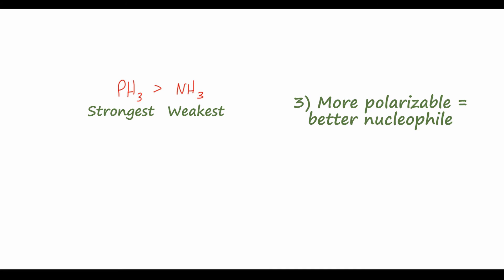Same with these compounds, H2Se, so with selenium, H2S, and H2O. So again, selenium is the largest atom in this group, which means it has the most polarizable electron cloud, whereas oxygen is the smallest and the least polarizable, so that means H2O will be the weakest nucleophile, and H2Se is the strongest nucleophile of these three.